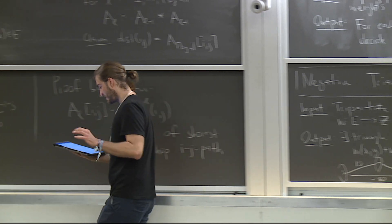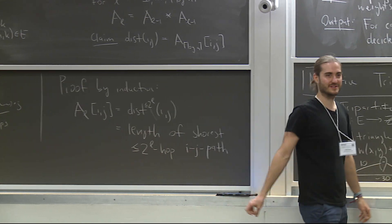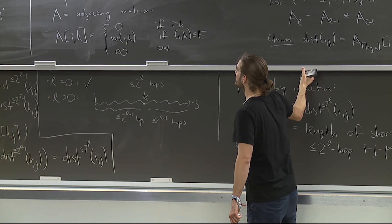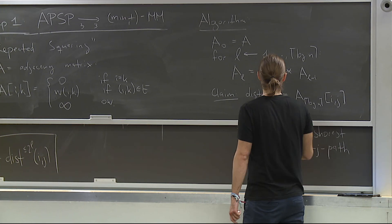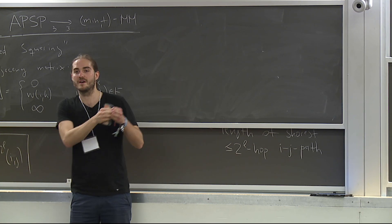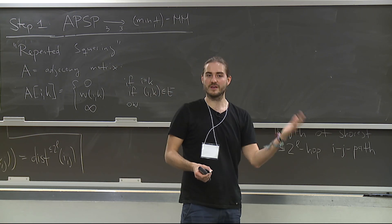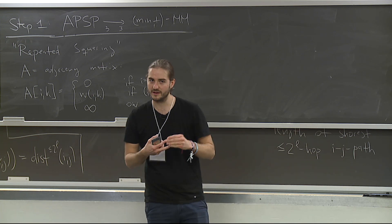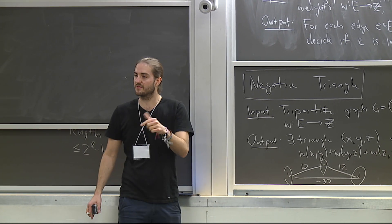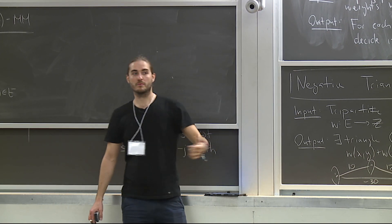Finally, the third part — this is really the magic part. When I first learned about fine-grained complexity, this was the part that excited me the most. So far we've massaged the problem a lot: we got rid of dealing with graphs and paths of arbitrary length, we got rid of having to compute the precise number — now you only decide whether it's negative or non-negative. But we're still left with all-edges negative triangle, in which you have to compute N squared outputs — something for every edge. But we want to say that all-edges negative triangle reduces to negative triangle, a problem with only one output bit.